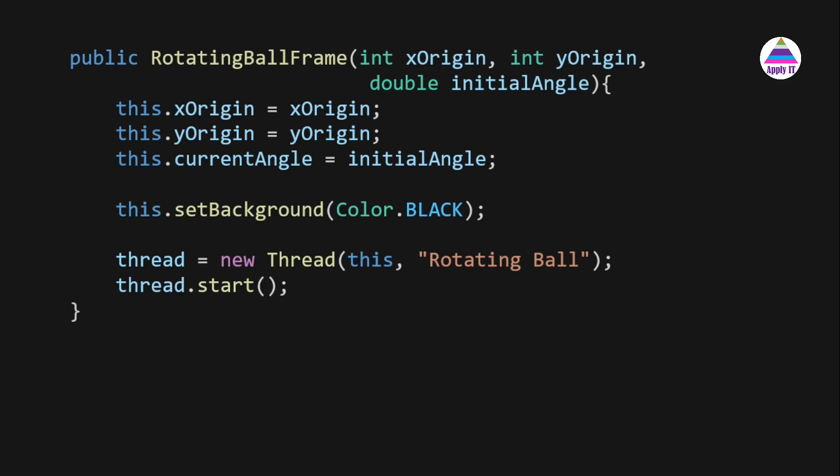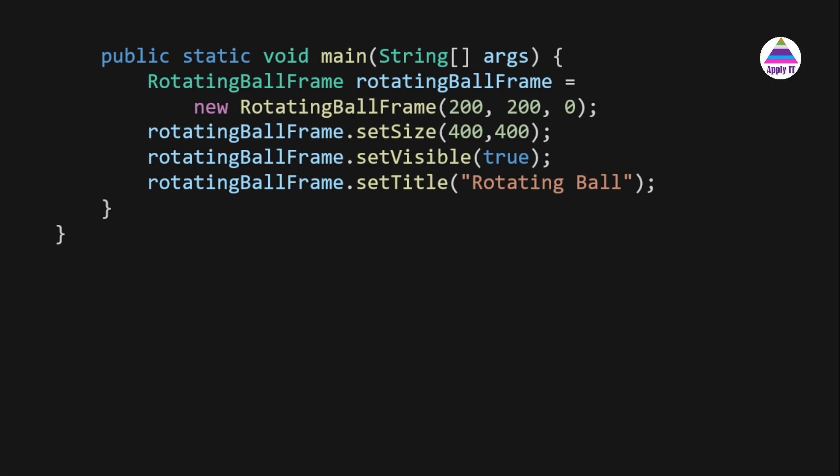In the main method, we create an object of RotatingBall, passing xOrigin, yOrigin, and the initial currentAngle as parameters to the constructor. Then we set the frame size to 400×400, call setVisible(true) so the frame is visible, and set the title to 'Rotating Ball'.